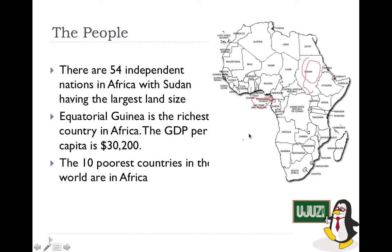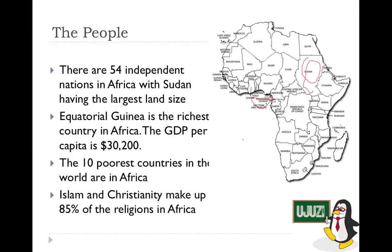On the other hand, 10 of the world's poorest countries are in Africa, many of them in western and central Africa — including Burkina Faso and Sudan. Islam and Christianity together make up 85% of religion in Africa.